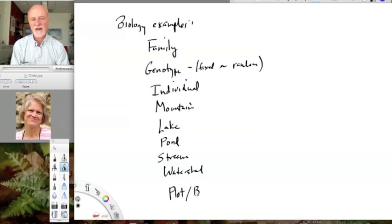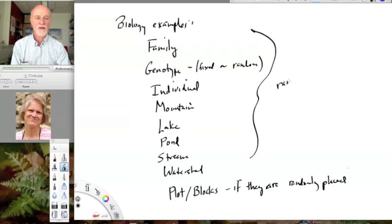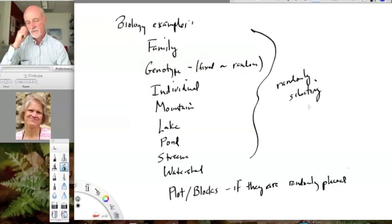And in fact, plots and blocks generally that we randomly place spatially, and this applies to if they are randomly placed, those would be considered random effects. And in fact, at every level, we need to be randomly selecting these for them to be considered random effects. So in every case, we are not interested in these particular lakes, ponds, streams, watersheds, etc. We are interested in lakes generally, or mountains generally, or individuals generally, from a larger population of ones that we could have studied.